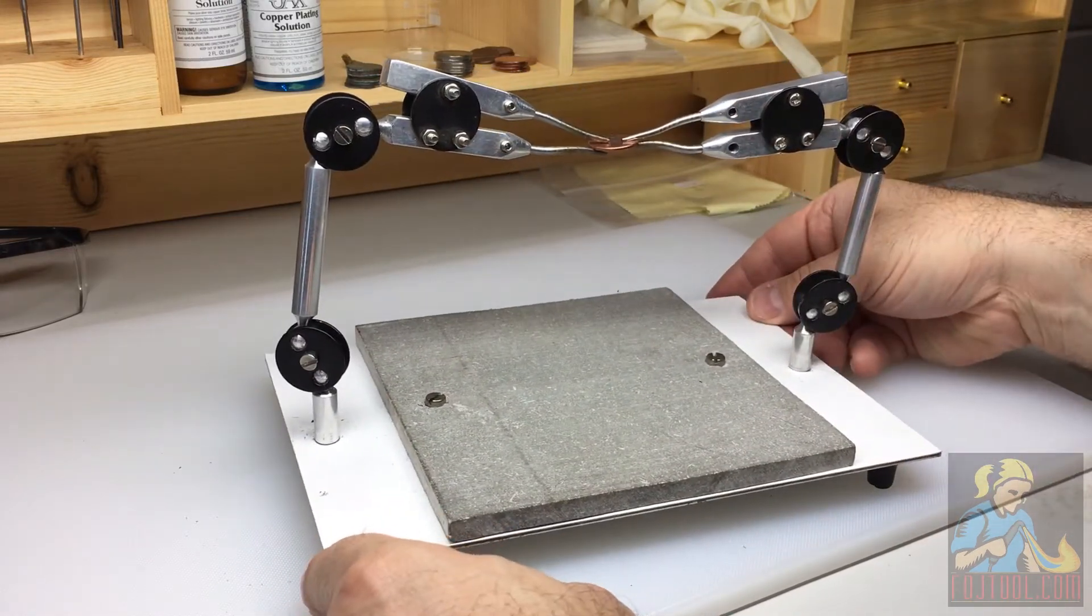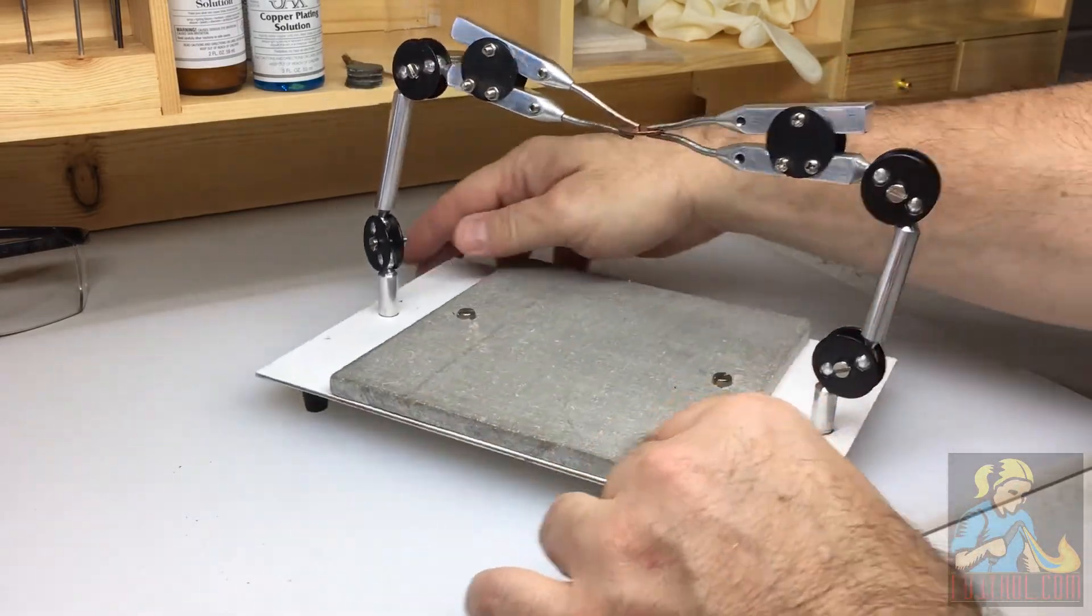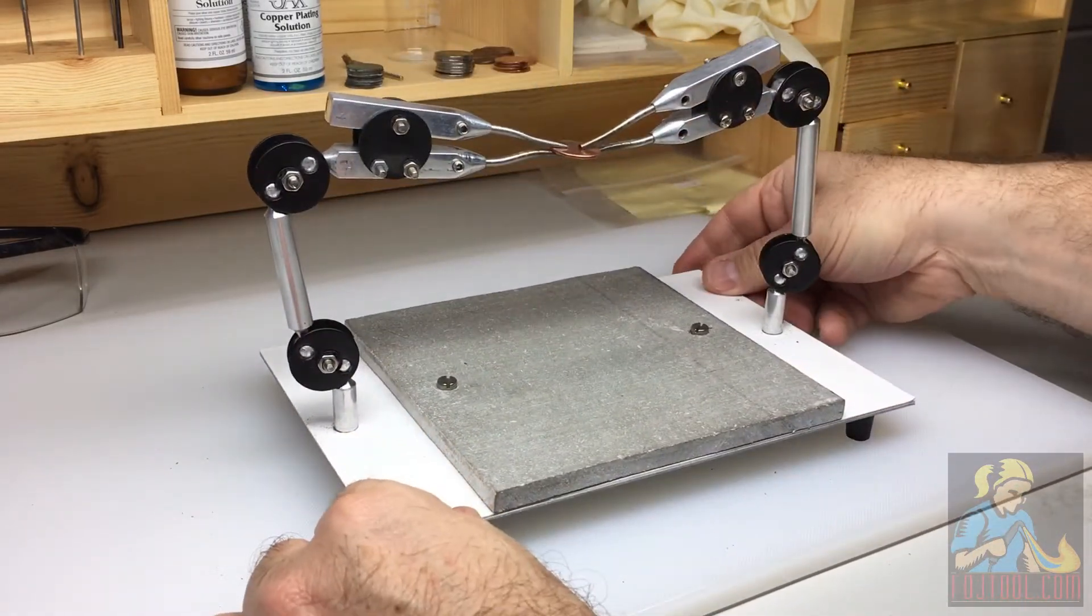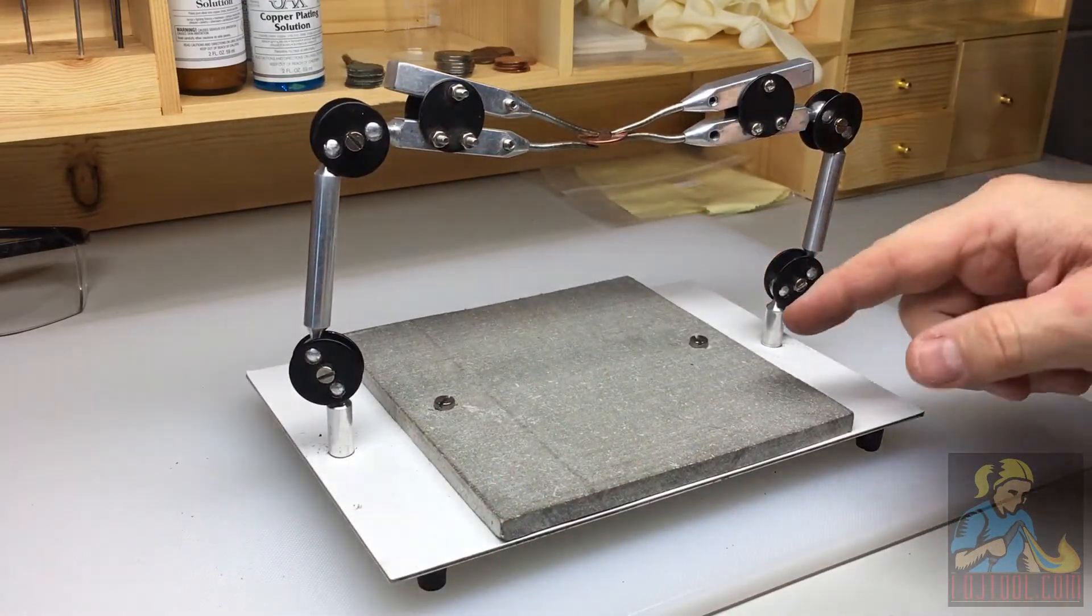The stand doesn't take up too much space. It measures about 9 by 6 inches. When you've got that tricky solder job, this is a great tool to have on hand to help you do it.